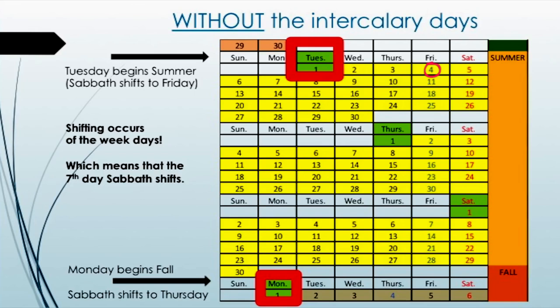When you begin fall, your season begins on Monday instead of Wednesday — moved back one day for summer, now moved back another day for fall to Monday. Your Shabbat, the fourth day of the month, would fall on Thursday. You see the shifting: in season one, the fourth day is on Shabbat, the seventh day. Season two, summer — your Shabbat is now on Friday, the sixth day. You've worked five days and are resting the sixth. Moving forward to fall, your Shabbat shifts again to the fifth day, Thursday in modern times.